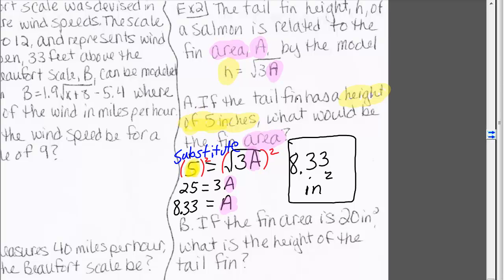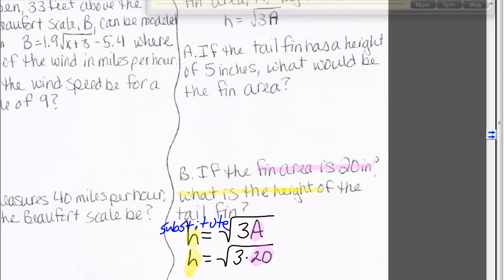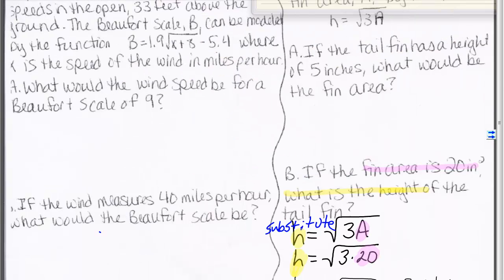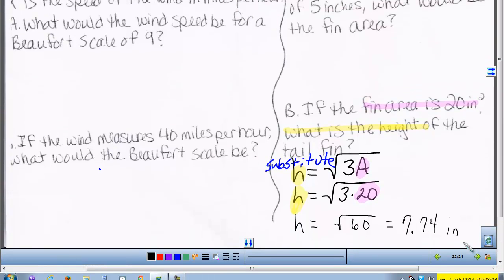Remember, we have a word problem, so we have a word answer. For part b, the fin area is 20 inches squared. Substitute the fin area in for A, and we get h equals 7.74 inches.